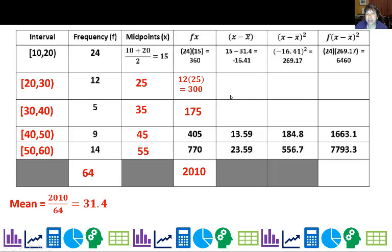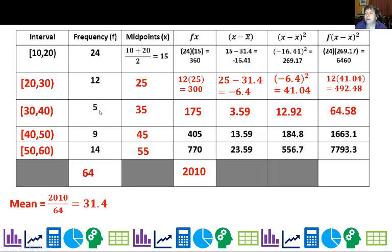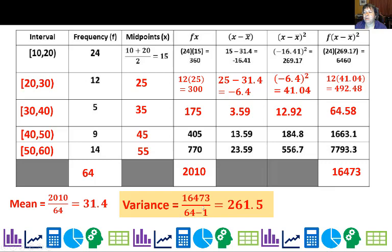Then we calculate the deviations by subtracting each midpoint from this mean. 25 minus 31.4 is negative 6.4. 35 minus 31.4 is 3.59. 45 minus 31.4 is 13.59. Then we square these values and multiply them by how many of them we have. We have 24 of these, 12 of these, and five of these. This gives me the squared deviations. My final sum of the squared deviations divided by n - 1. Instead of dividing by 64, we divide by 63. Our variance is 261.5 and our standard deviation is 16.2.